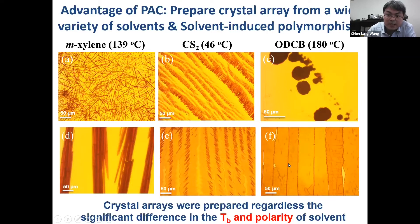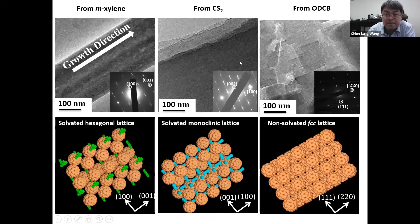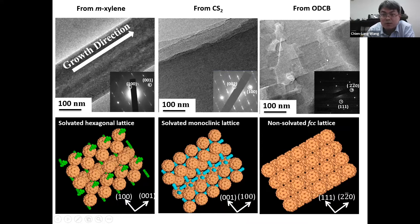After getting this crystal array, we put it into TEM to see more detailed morphology. Crystals grown from different solvents show different morphology. For crystals grown from mesitylene and CS2, you can see a really continuous charge transport channel. But for crystals grown from ODCB, there are more grain boundaries. Initially, we thought ODCB crystals would give lower mobility, and the others higher mobility.